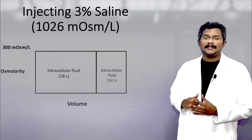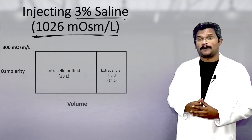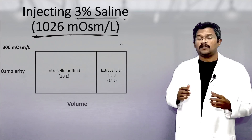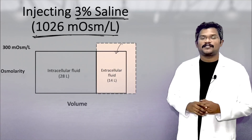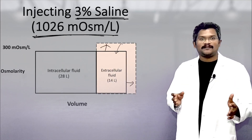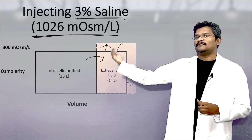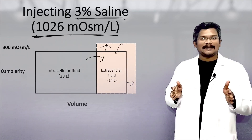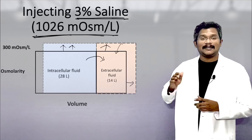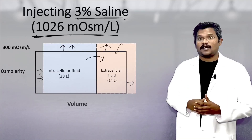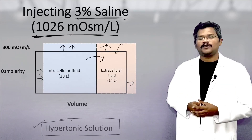Let us see what happens if we add a 3% saline solution into the extracellular fluid. The total osmolarity is more than 1000 milliosmoles per liter. If we add such a solution, the volume expands and the osmolarity increases. Now there is an osmolarity difference, so water moves from the dilute side to the concentrated side — from the intracellular to the extracellular fluid — and the intracellular volume shrinks. Since only water is moving out, the concentration of the intracellular fluid increases until it matches the extracellular fluid. Such solutions are called hypertonic solutions — solutions which shrink the cell and decrease its volume.